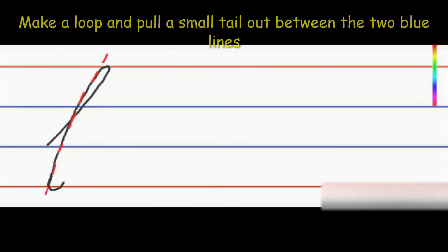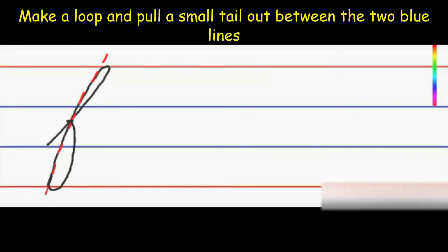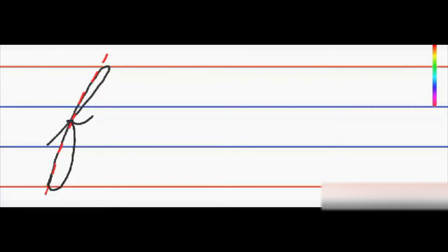And then we take a curve here till the point of separation and then pull a tail out. But mind you, here it has gone up below, it has gone a bit below the red line, so this has to be avoided. We'll try to make it again.